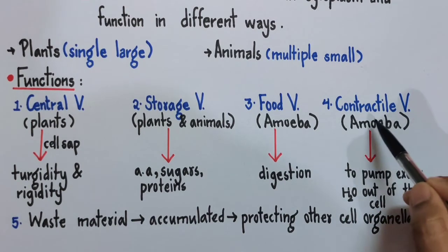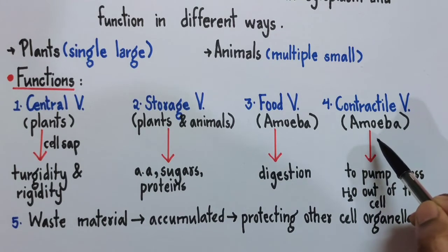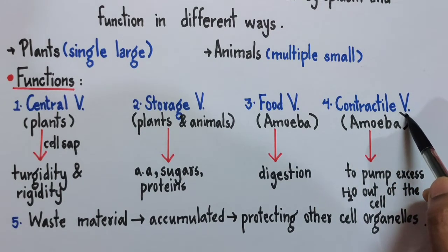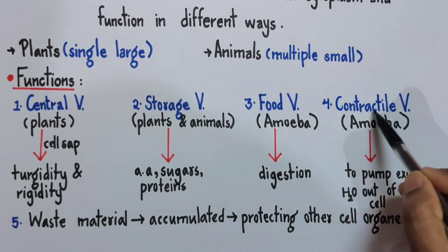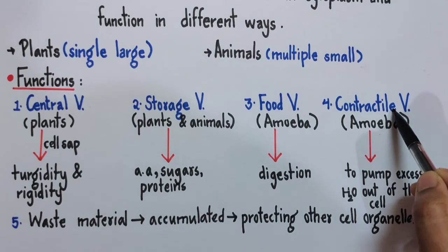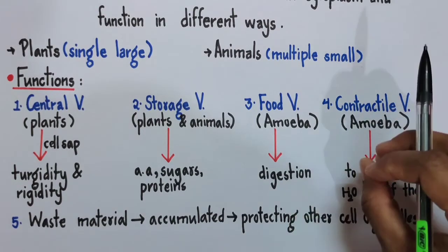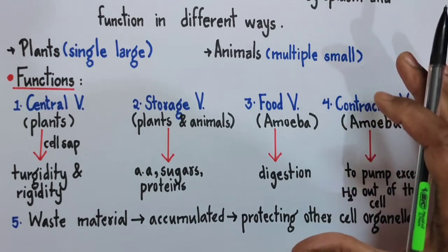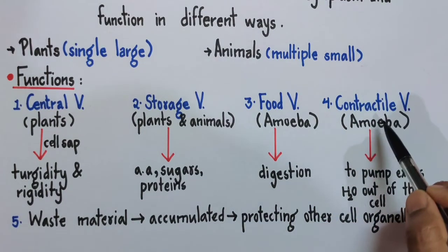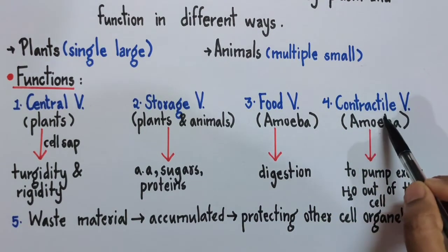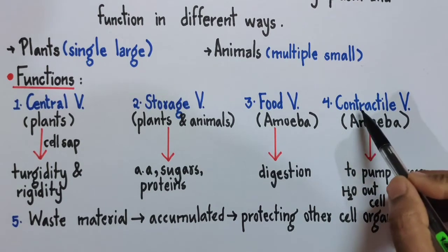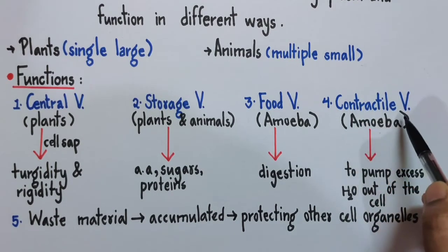So all the extra water from the cytoplasm will enter this contractile vacuole, and when this contractile vacuole is filled to its maximum capacity, it contracts. And when it contracts, it pumps out the excess water. Since these vacuoles contract to function, they are given the name contractile vacuole.